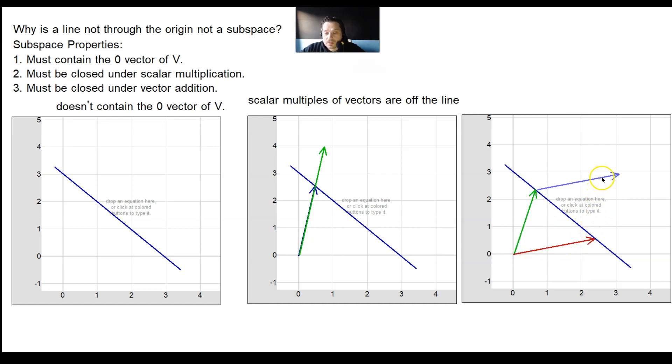Make a copy of the red vector, move it over here, and I think you probably see the issue already, which is that when you add them, the resultant is not on the line. It's right here, off the line.